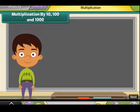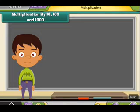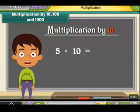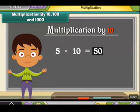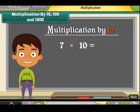Let us now learn how to multiply numbers by ten, hundred, and thousand. When we multiply a number by ten, we add one zero to the right of the number to get the result. Let us multiply seven by ten: add one zero to the right of seven to get the result as 70.